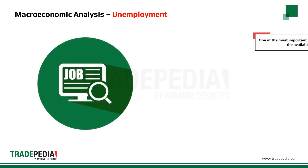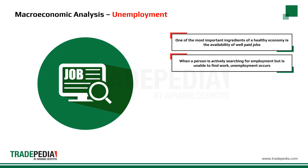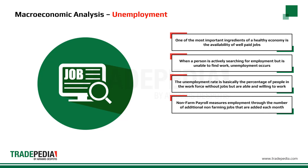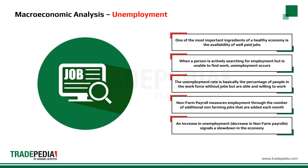Another important macroeconomic factor is the job market. One of the most important ingredients of a healthy economy is the availability of well-paid jobs. Unemployment occurs when a person is actively searching for employment but is unable to find work. It is measured by the unemployment rate, which is the percentage of the workforce without jobs but who are able and willing to work. Non-farm payroll measures employment through the number of additional non-farming jobs added each month. An increase in unemployment or a decrease in non-farm payrolls signals a slowdown in the economy.